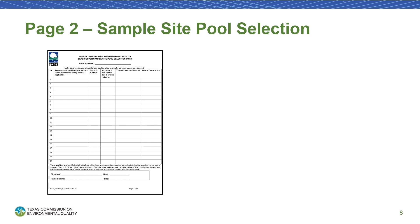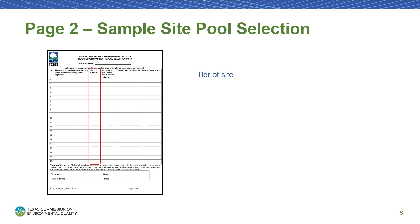Page 2 of the form is where you'll write the address, tier information, and plumbing information for each of your sites. The first column provides a numbered list. The total number of sites added on this page should match the sum listed at the bottom of page 1. The location address column is where you'll provide the street address for each site — you do not need to include the city, state, or zip code here. In the Tier 1, 2, 3, Other column, you'll write the tier that the site falls into. In the Served by a Lead Service Line column, you'll indicate if the utility side of the line is a lead service line. If you don't have that information, you can write unknown.